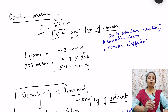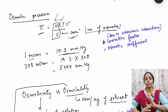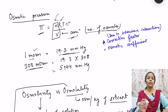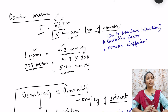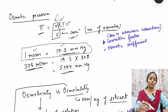One milliosmole exerts a pressure of 19.3 mmHg. The 0.9% NaCl solution creates 0.308 osmoles, which equals 308 milliosmoles. So 308 milliosmoles will exert a pressure of 19.3 × 308 = 5944 mmHg. This simplified form uses n/V since RT is constant.